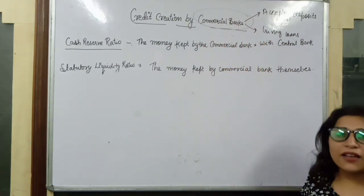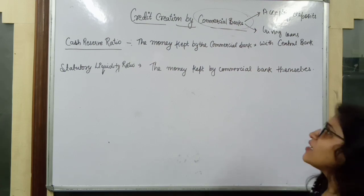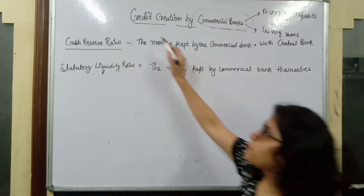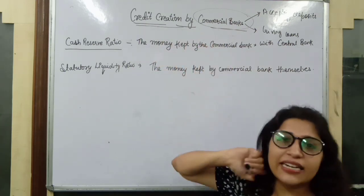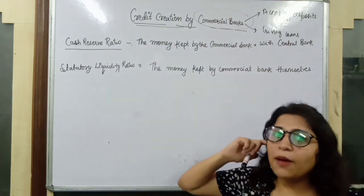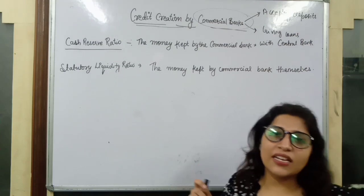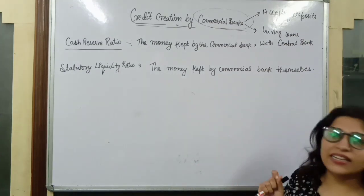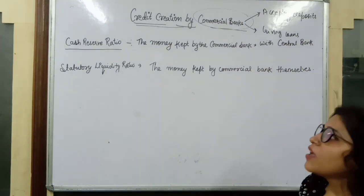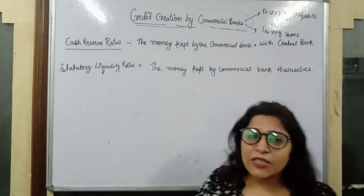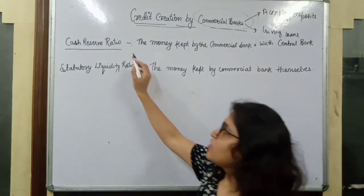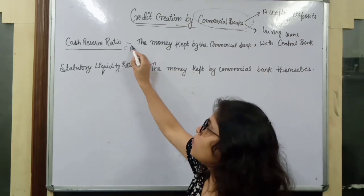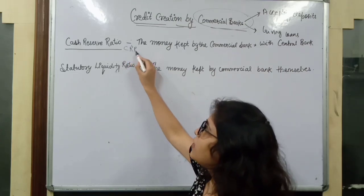Commercial banks, by giving loans, create credit in the entire country. We have to see the process of how they create credit. For this, we have two ratios. One is the Cash Reserve Ratio, which we call CRR.